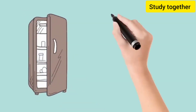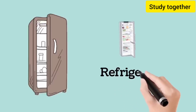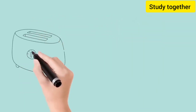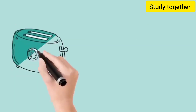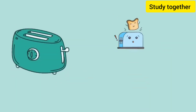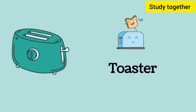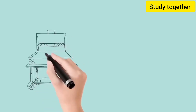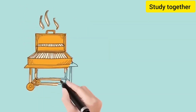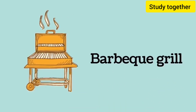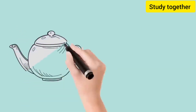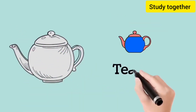This is a refrigerator. This is a toaster, we call it toaster. This is a barbeque grill. This is a tea pot, we call it tea pot.